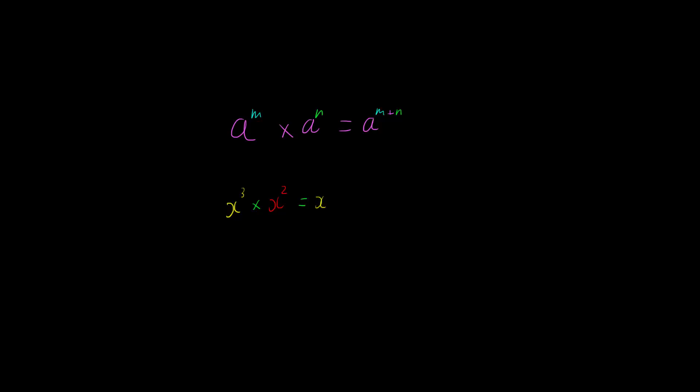So if we take x to the power of 3, which is x times x times x, and then we multiply that by x squared, which is x times x.